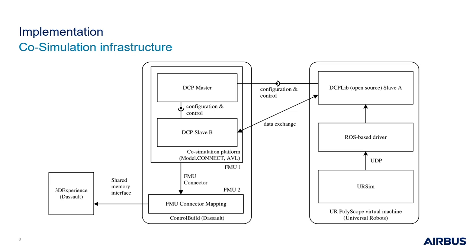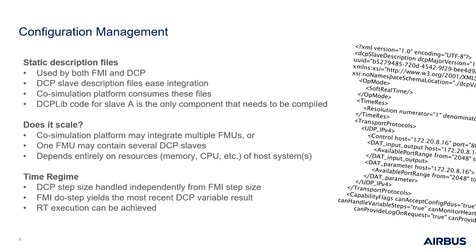The advantage of this architecture is that FMUs are subject to integration by any FMI-compatible robot programming software tool. Our architecture is fully configurable, meaning that the used software tools and interfaces can be configured to own needs. To realize our architecture, the only compiled component was the DCP interface on the UR virtual machine. Both DCP and FMI rely on XML-based configuration files. Our architecture is fully scalable, which means that multiple robots can be structurally integrated. The co-simulation platform may integrate multiple FMUs, and one FMU may contain multiple DCP slaves.